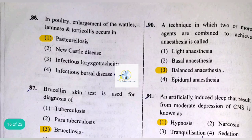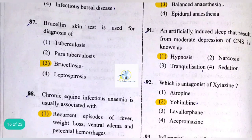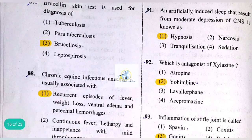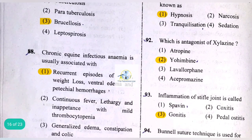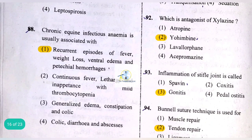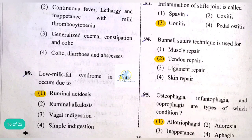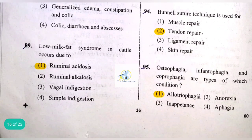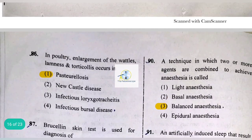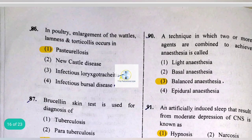The brucellin skin test is used for diagnosis of brucellosis. Chronic equine infectious anemia is usually associated with recurrent episodes of fever, weight loss, ventral edema, and petechial hemorrhages. Low milk fat syndrome in cattle occurs due to ruminal acidosis.